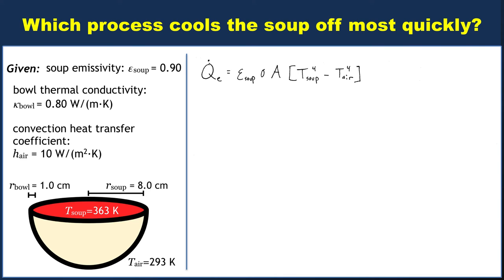So what is the area in this case? We said the radiation was escaping out of the top of the bowl, so the area really ought to be πr², where r is the radius of the soup, so 8 centimeters. So now we can just plug in all of our values because we know the Stefan-Boltzmann constant.